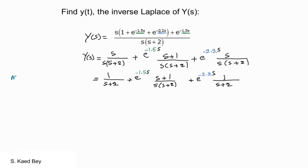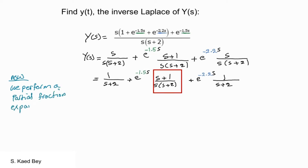We now perform a partial fraction expansion for each time delay term. In our case here, we only need to perform the expansion for the term with a 1.5s delay. In general, you must do a complete expansion for each term.